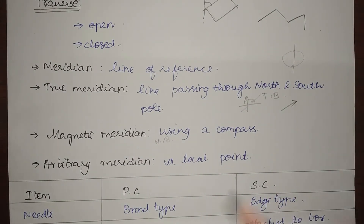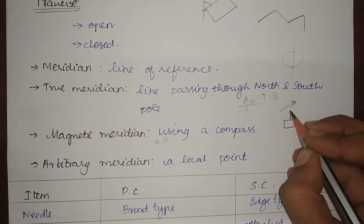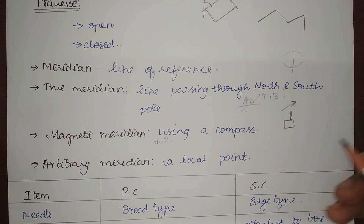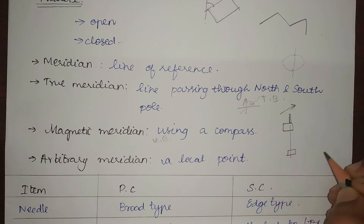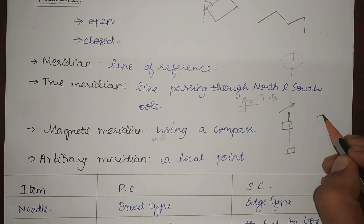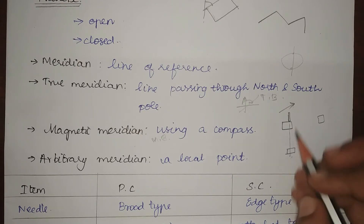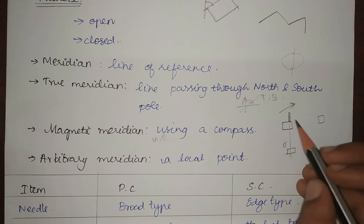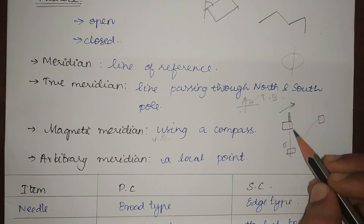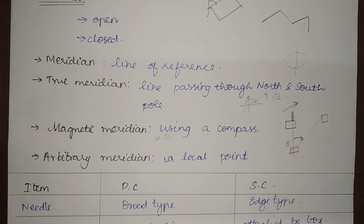The third is the arbitrary meridian — a local point of reference such as a church, a pole, or any object. For example, say I have a building with a pole at the top. I place my theodolite at a vertical reference line and find the angle between the pole and some other object. By rotating the theodolite from the zero setting, I measure the angle. We will look at the theodolite in detail in upcoming videos.